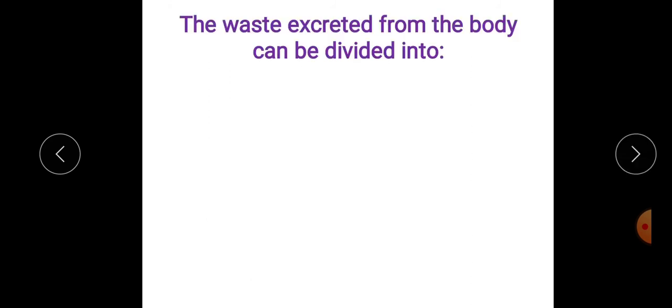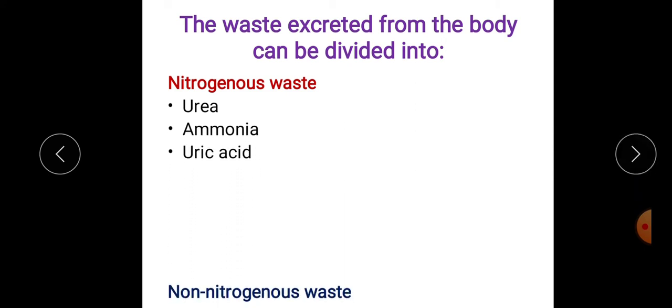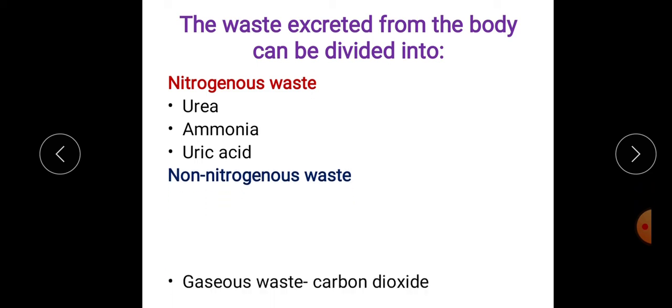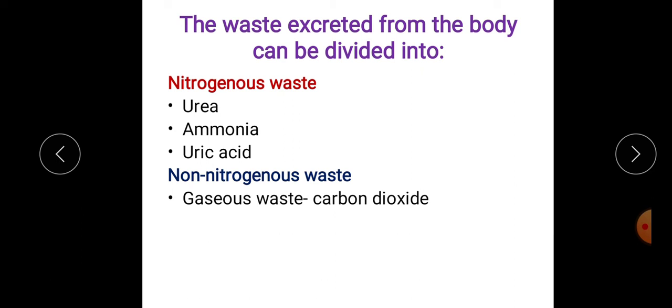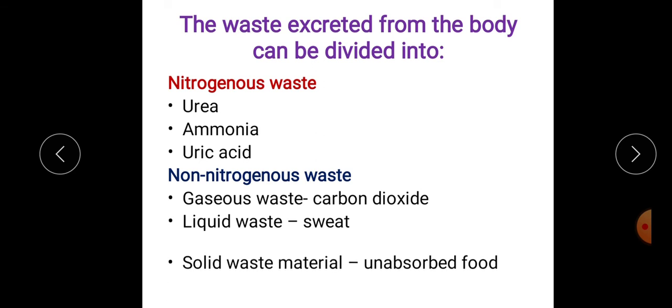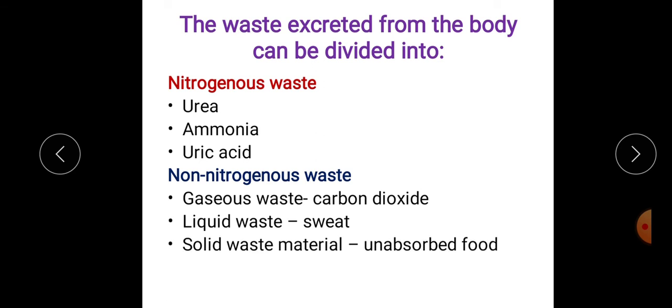The waste excreted from the body can be divided into nitrogenous waste. This includes urea, ammonia, uric acid and non-nitrogenous waste. This includes gaseous waste material like carbon dioxide, liquid waste like sweat and solid waste material like unabsorbed food.